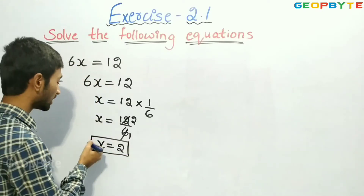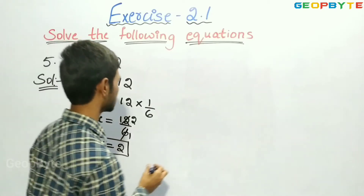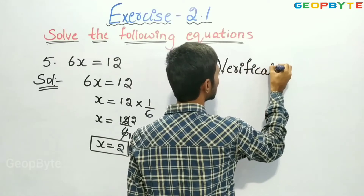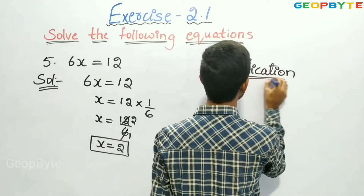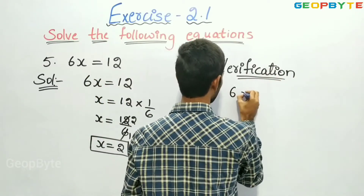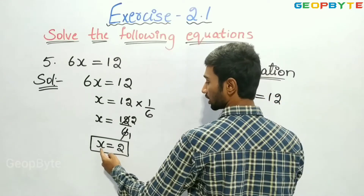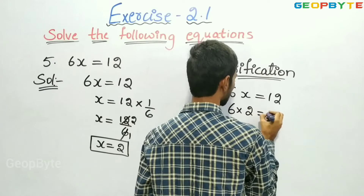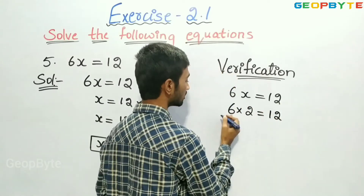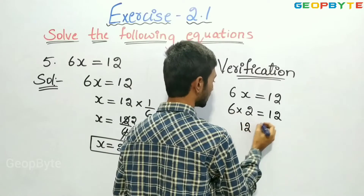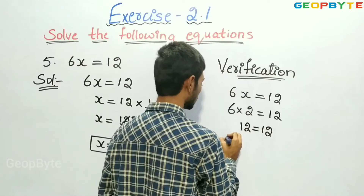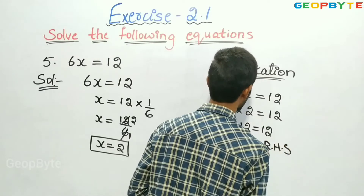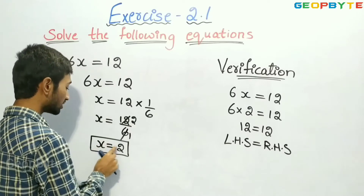Now let us verify whether x is equal to 2 or not. Verification: the given equation is 6x is equal to 12. We got the value x equal to 2. So, 6 into 2 is equal to 12. Here, 6 into 2 is 12, equal to 12. So, LHS is equal to RHS. So, we got the answer correct. That is, x is equal to 2.